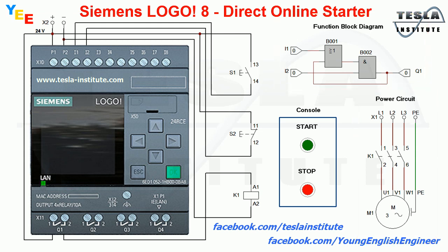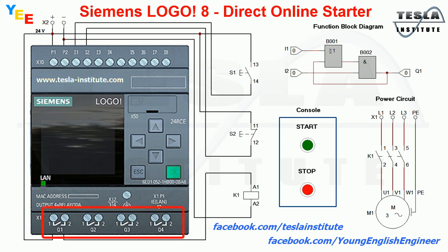The Siemens Logo 8 Controller has 2 power supply terminals, 8 digital input terminals, 4 relay digital outputs, and an LCD display which can show the input and output states.